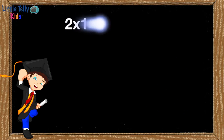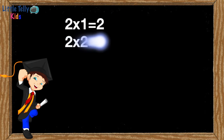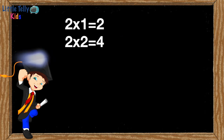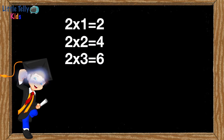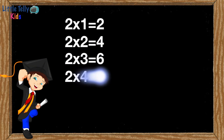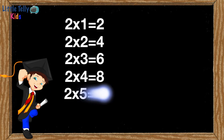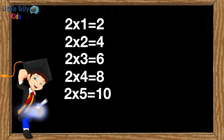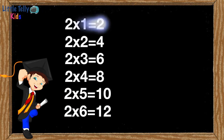Two ones are two. Two twos are four. Two threes are six. Two fours are eight. Two fives are ten. Two sixes are twelve.